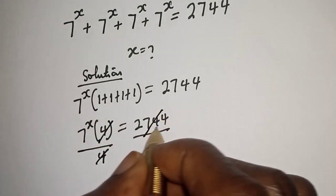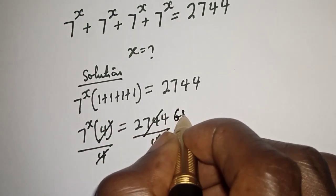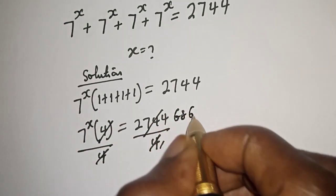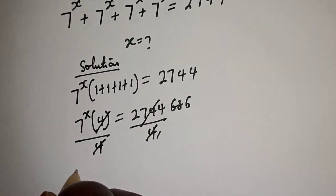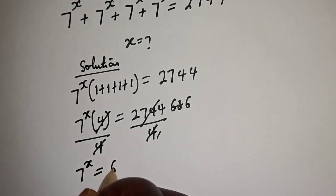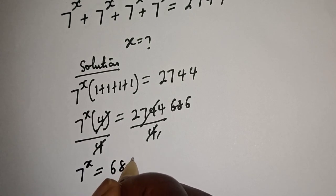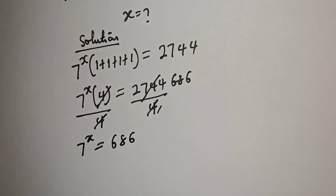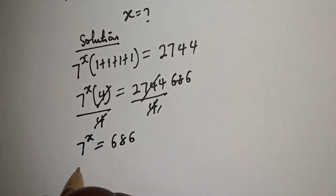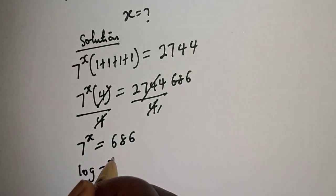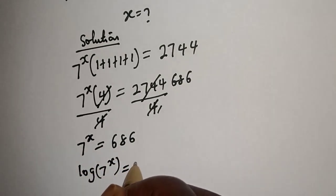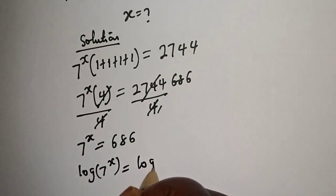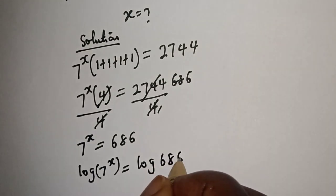Now let's divide both sides by 4. Divided by 4 — this will cancel this. 2744 divided by 4 gives 686. So 7 raised to power s is equal to 686. Now let's take the log of both sides: log of 7 raised to power s is equal to log 686.